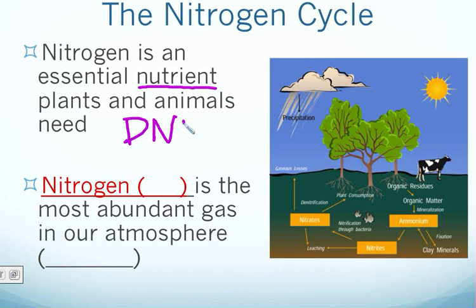What is that nitrogen for? It is for our DNA. Our genetic makeup consists of a fair amount of nitrogen, and that nitrogen plays a key role in keeping us alive and keeping us here on earth.